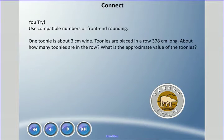You try! I'd like you to use compatible numbers or front-end rounding, you choose. We're going to talk about toonies here. Now, one toonie is about three centimeters wide. If you're one of our American or international viewers, a toonie in Canada is our two-dollar coin. It's really complicated and ridiculous how it got that name - I won't go into it, you can look it up. But just so you know, a toonie is a two-dollar coin and it's about three centimeters wide.